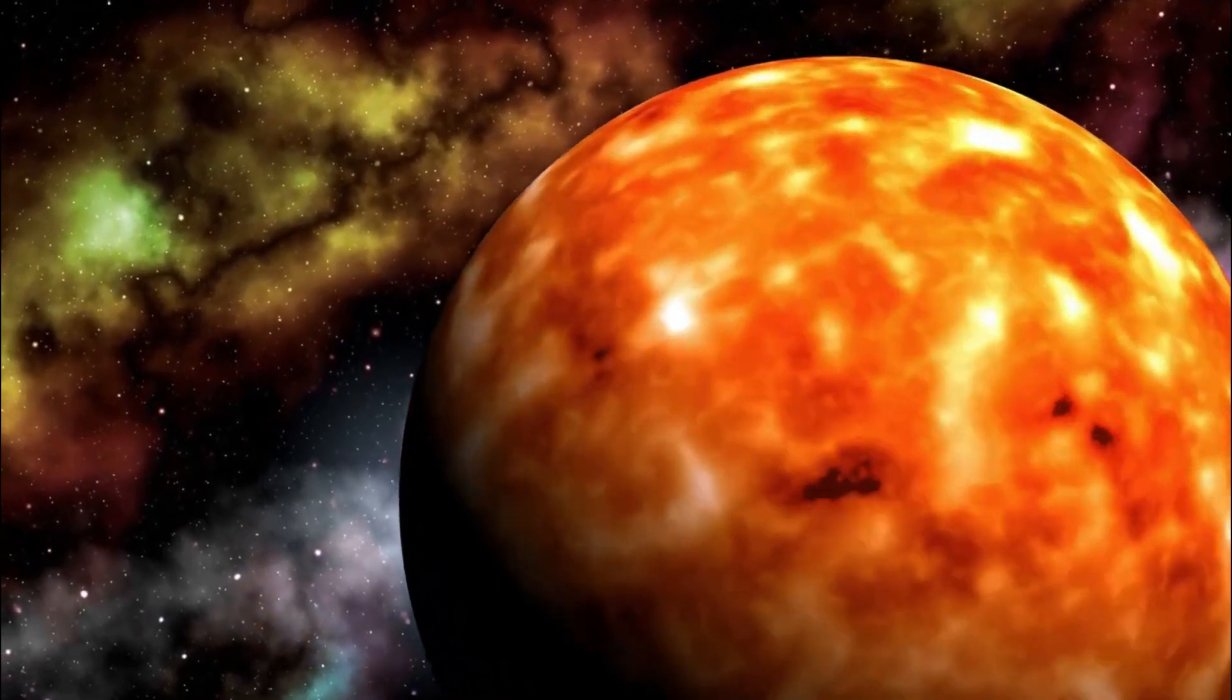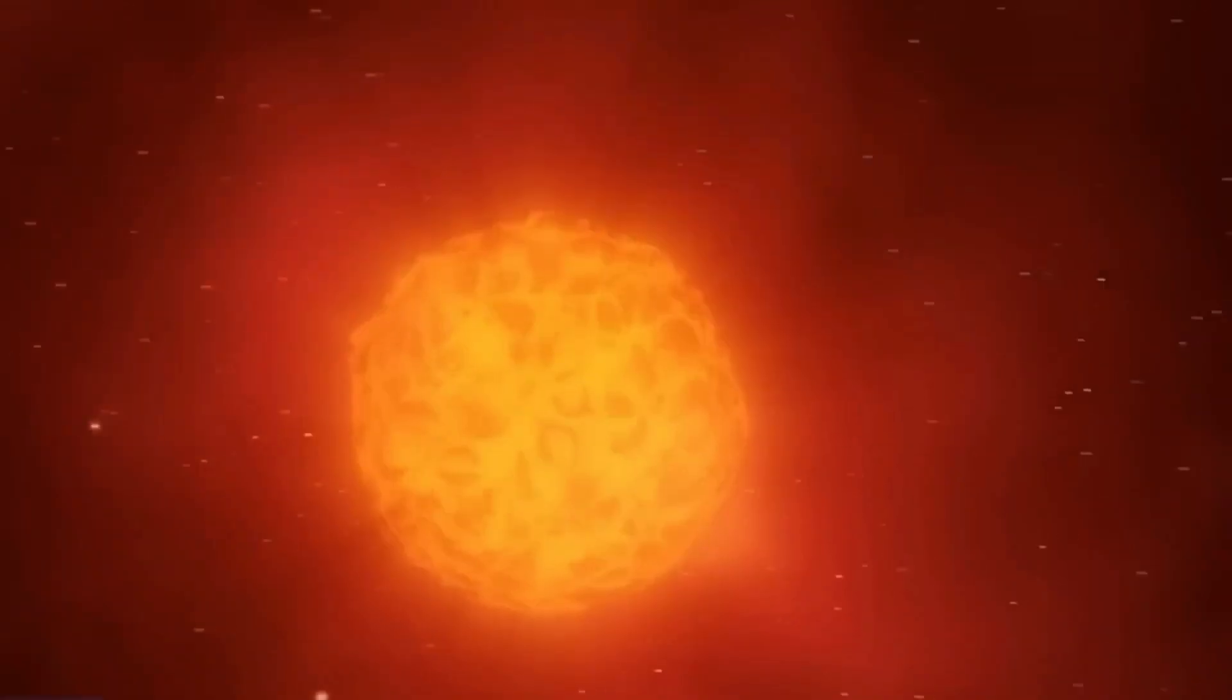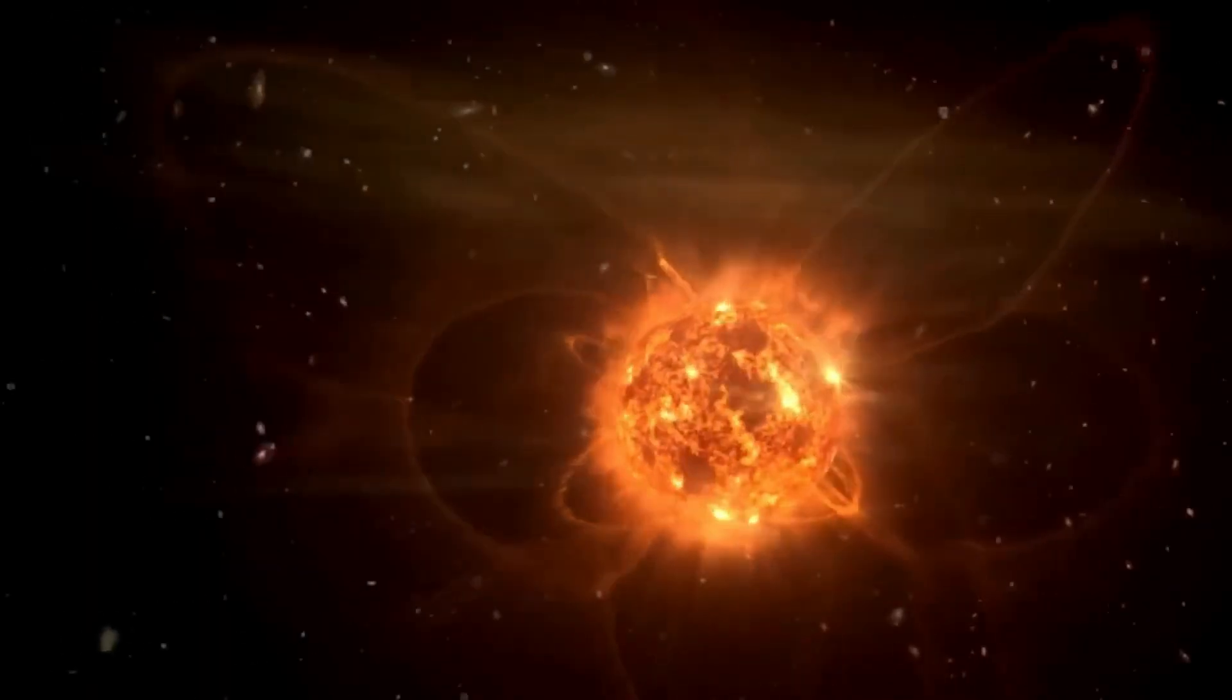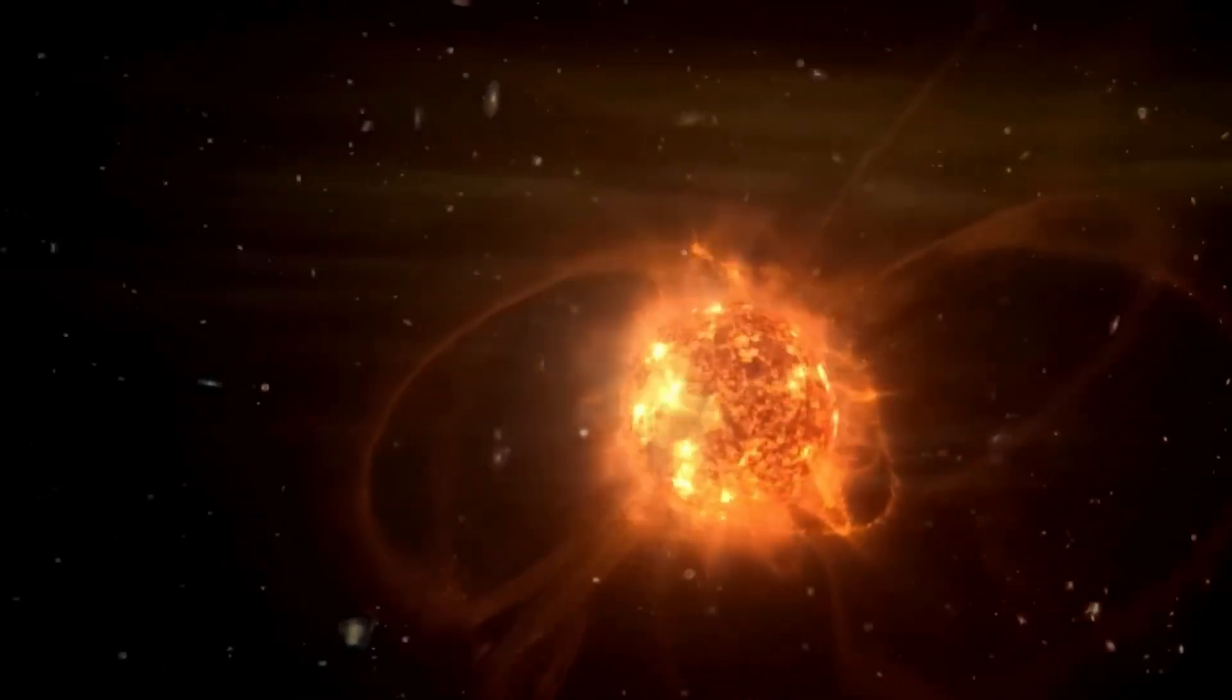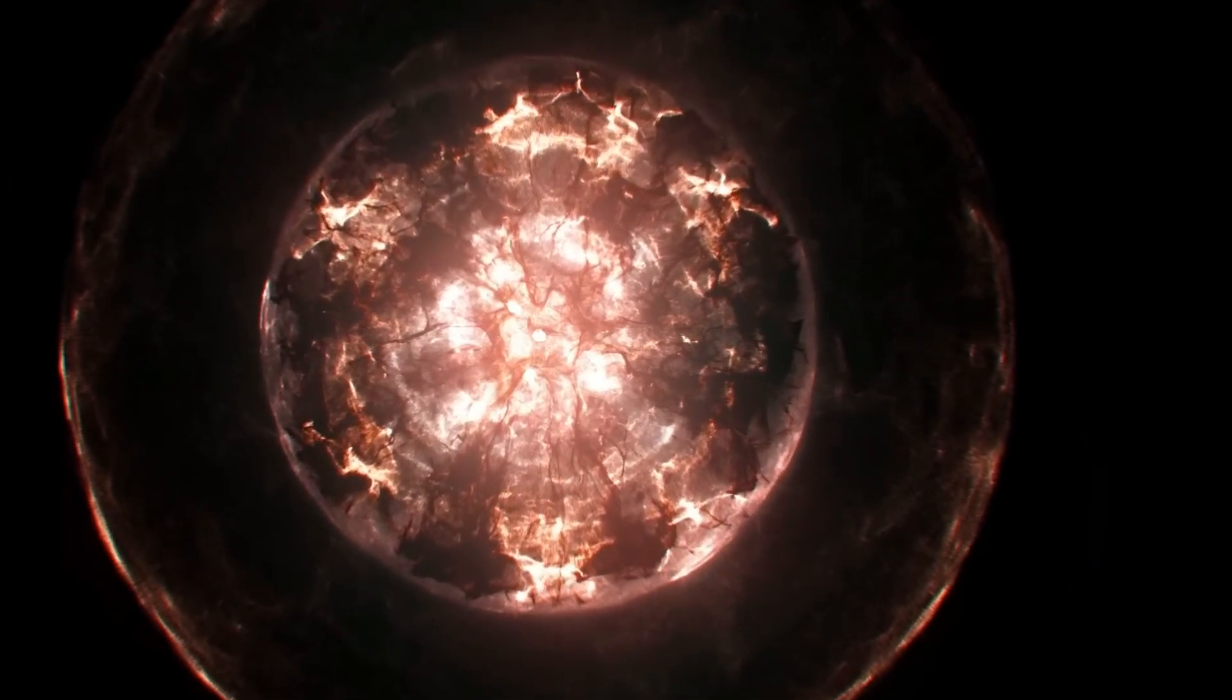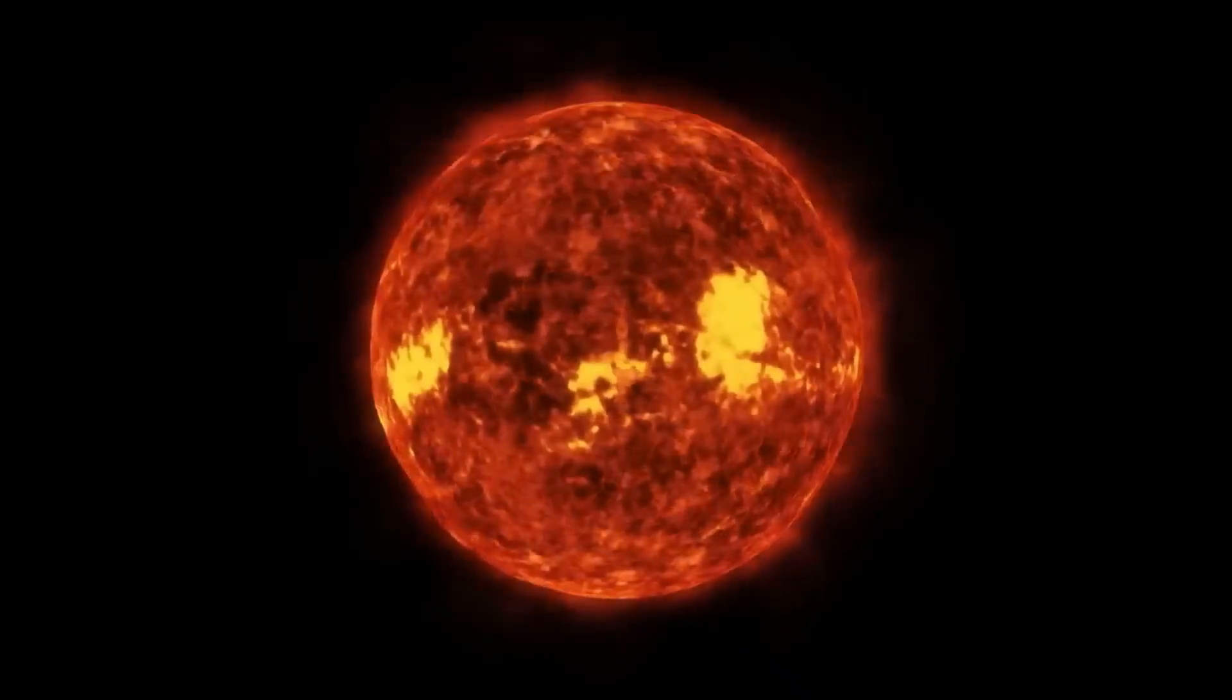The X-rays and gamma rays that are associated with the supernova are the most worrisome aspect. A potential threat to Earth's protective ozone layer is the catalytic breakdown of oxygen by means of high-energy radiation. Life on Earth would be in danger of extinction if the ozone layer weren't there to shield us from the sun's harmful ultraviolet rays.